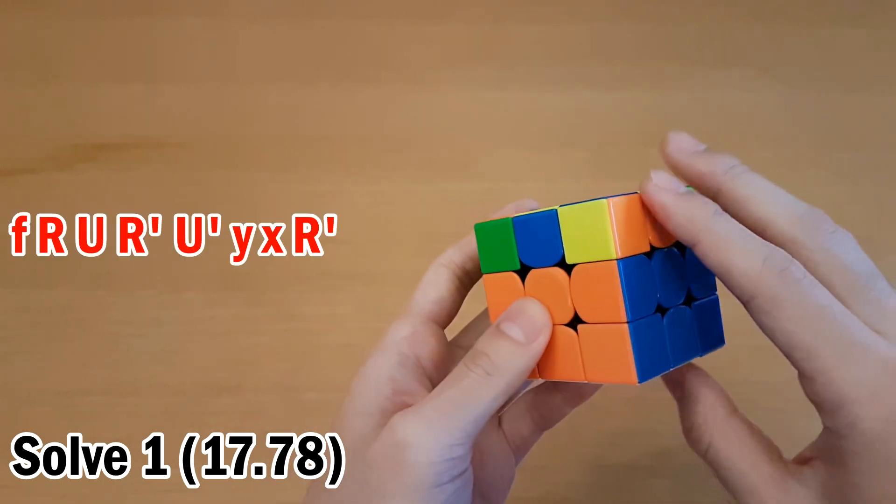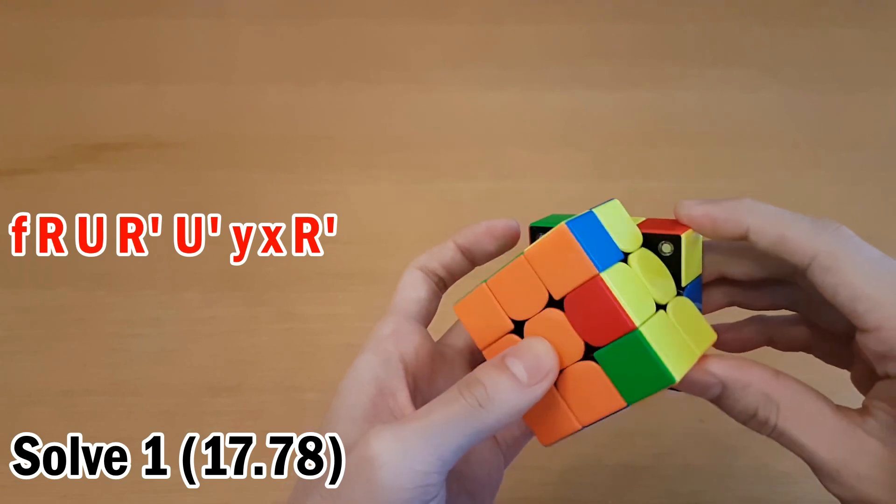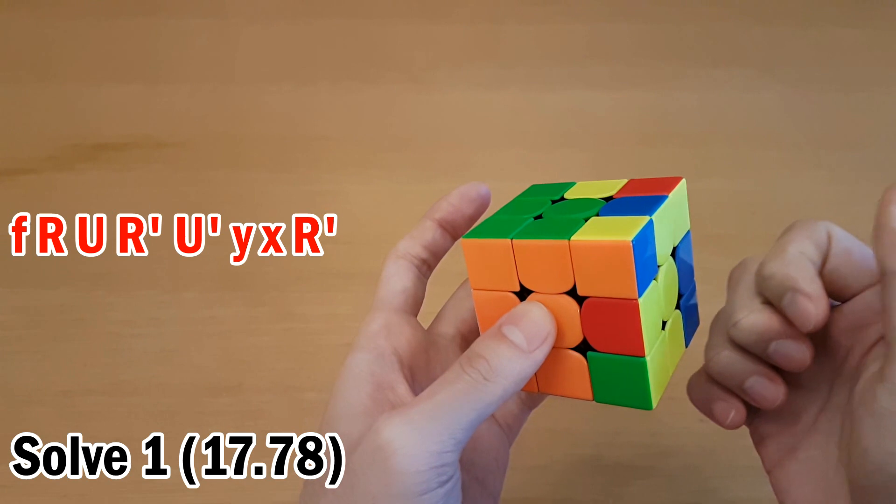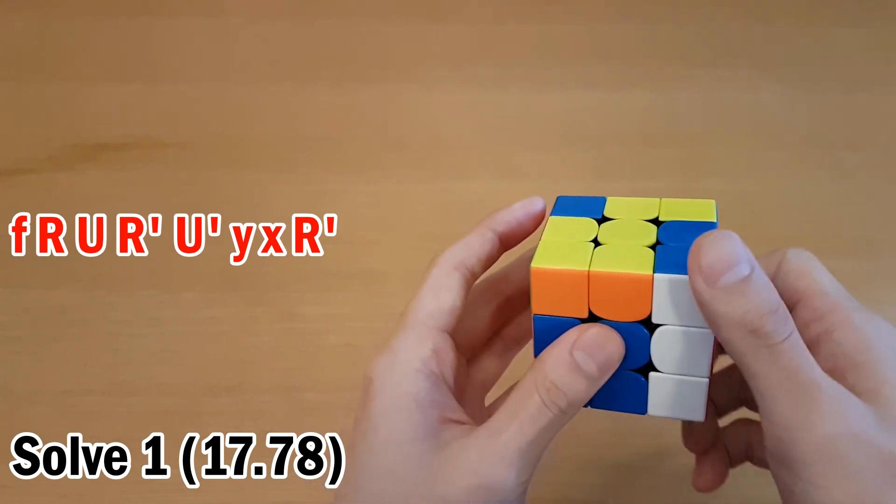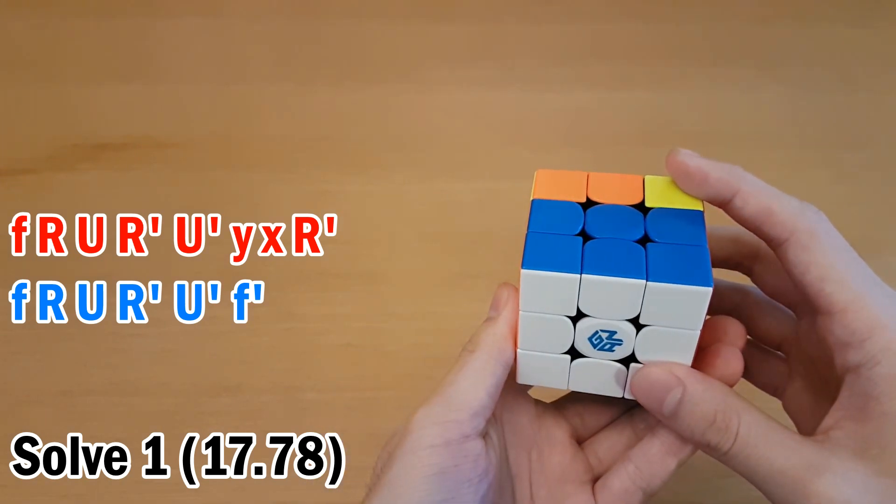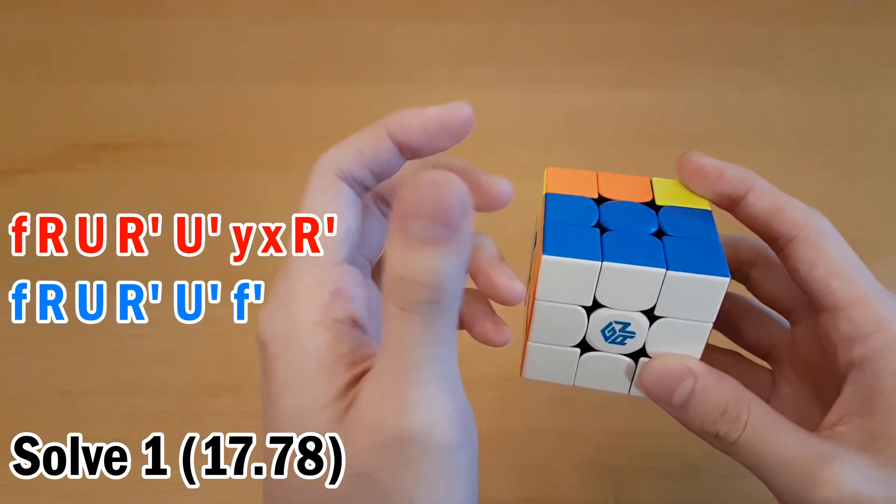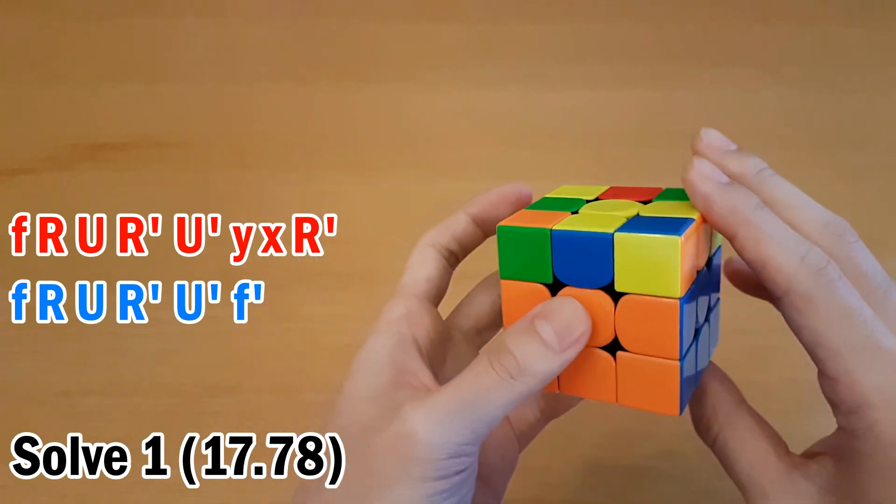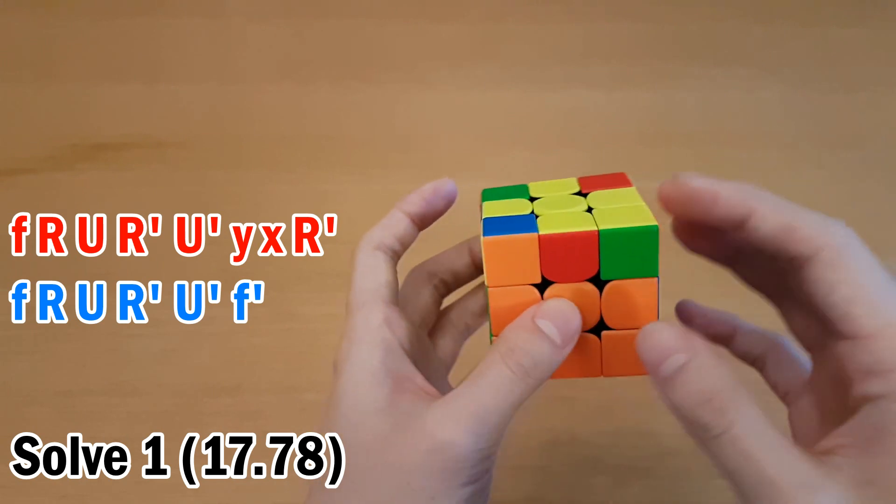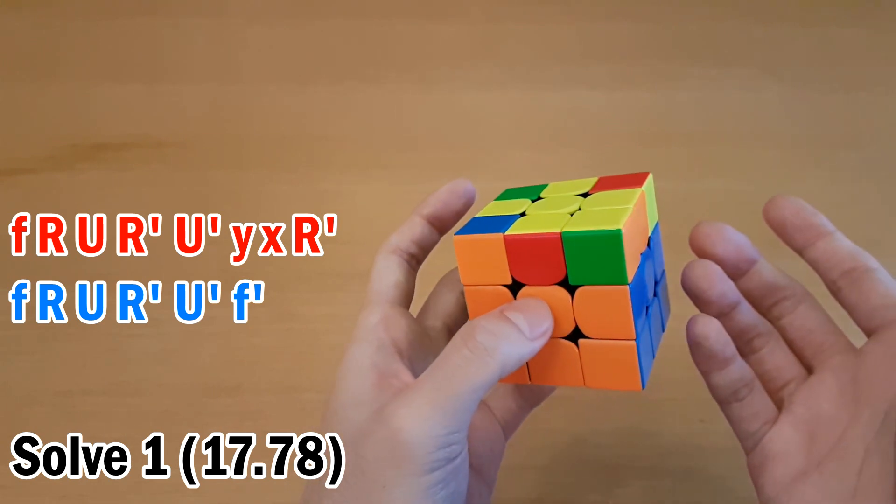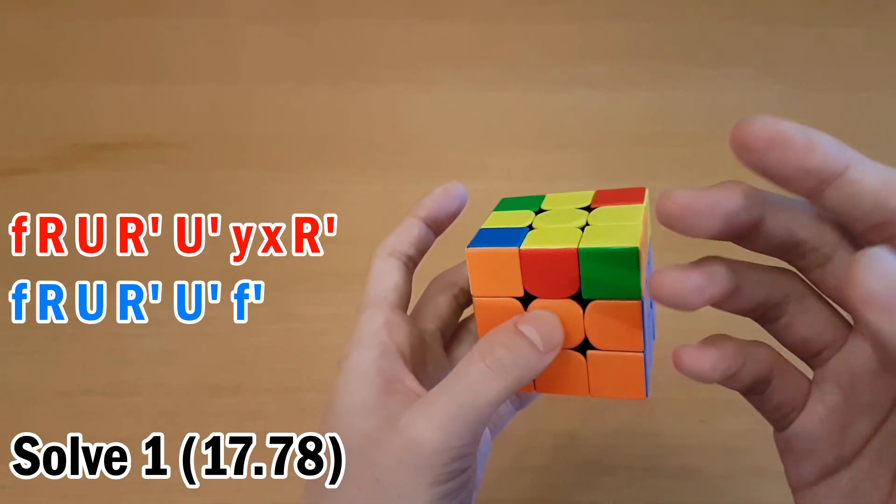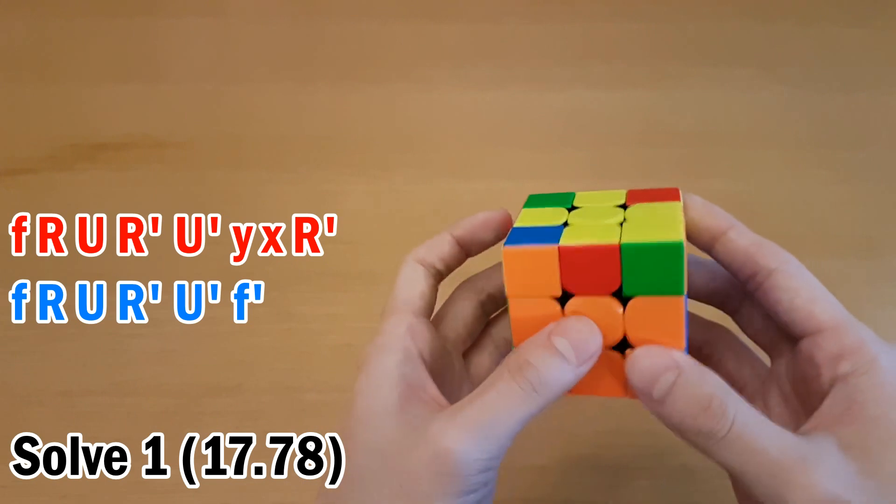For your two look OLL, you started with wide F, R U, R prime, U prime. And instead of F prime here, because the double layer F prime is a little awkward, you did it by rotating to here and then doing R prime. The double layer F prime is important because what happens when you rotate the cube is your left hand has to readjust its grip, which can cause mistakes in the next algorithm. But if your left hand always stays in the same place and your right hand just does whatever it wants, then usually that's a better way to go about things. It's harder to notice the effects of it now, but the faster you get, the more this will make a difference. In general, try to keep your finger tricks simple and don't do cube rotations if not necessary.